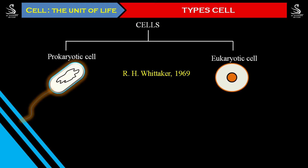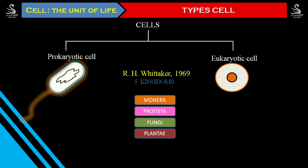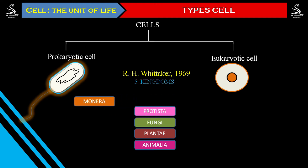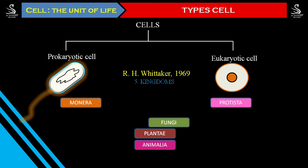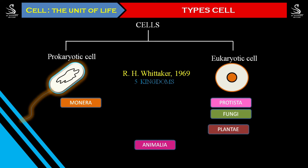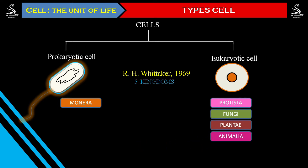In the year 1969, scientist R.H. Whittaker classified all living organisms into five kingdoms: Kingdom Monera, Kingdom Protista, Kingdom Fungi, Kingdom Plantae, and Kingdom Animalia. All organisms belonging to Kingdom Monera are prokaryotes only, while Kingdom Protista, Kingdom Plantae, and Kingdom Animalia are all made up of eukaryotic cells.